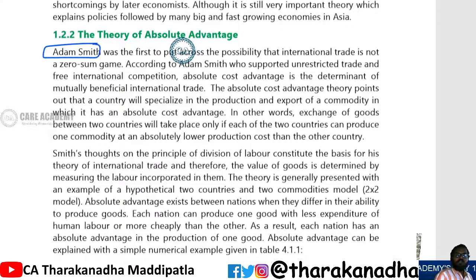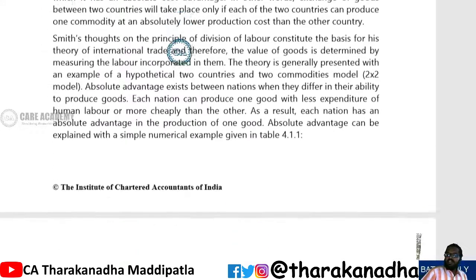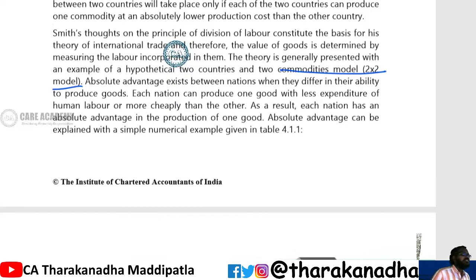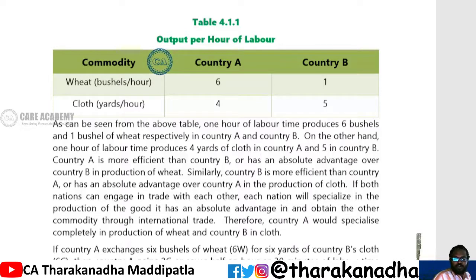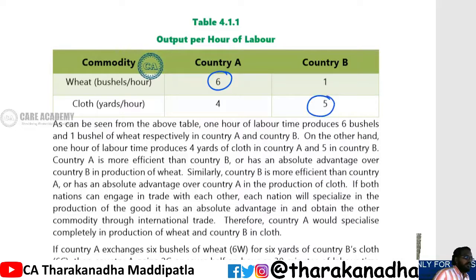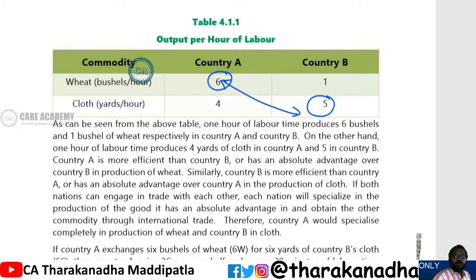The theory of absolute advantage was put forth by Adam Smith. In this theory, they take a two-by-two model — two countries, two commodities. In country A, for one hour you can produce six bushels of wheat and four yards of cloth. In country B, for one hour you can produce one bushel of wheat and five yards of cloth. Country A has absolute advantage in producing wheat and country B has absolute advantage in producing cloth, so they exchange the products in which they have absolute advantage. That is the theory of absolute advantage.